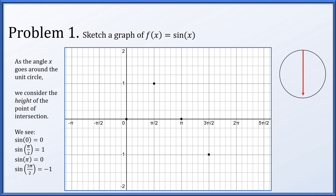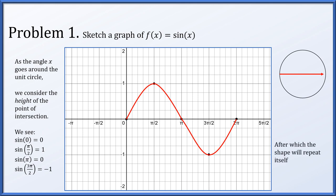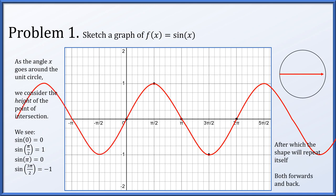Now if we keep rotating, the height of the point on the unit circle will come back up to zero. So we put two pi comma zero into our plot. The height went up fairly quickly, slowed down, came down, sped up, then slowed down towards the bottom and came back up. If you fill in the blanks, we get a curve somewhat like this. The shape will repeat itself — if we keep rotating, we're duplicating the same angles we've seen before. So the shape will simply repeat itself forever in this direction, but also backwards.